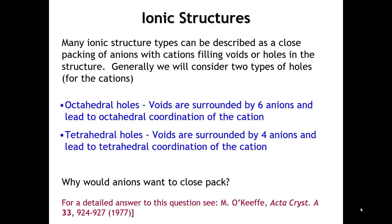So putting the ions as close together as possible gives the same pattern as putting them as far apart as possible. To be clear, in ionic structures the anions do not touch each other—we're trying to keep them far apart. But there are symmetric voids where the cations can go, and we generally think about cations and anions touching each other.